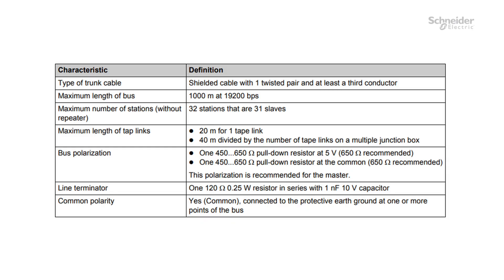There may be additional cabling rules according to the fieldbus used. For example, using PROFIBUS, CANOPEN, or MODBUS, you must check the line terminator, the length of the bus, and the number of slaves. For more information, please refer to the guide for each module on www.se.com.